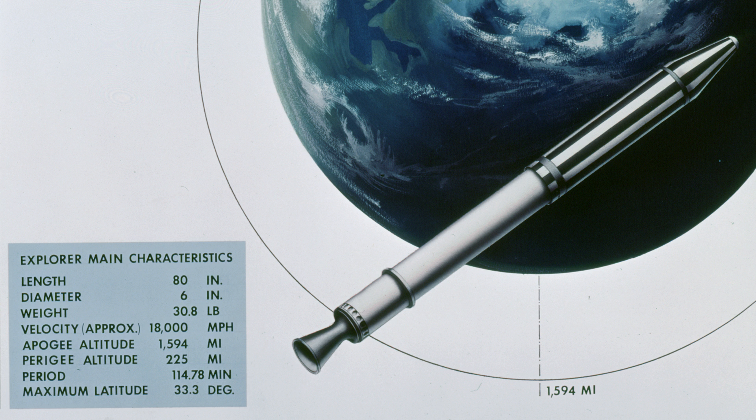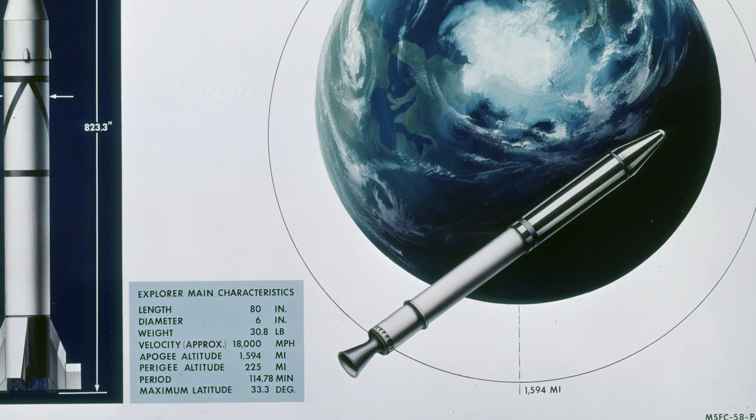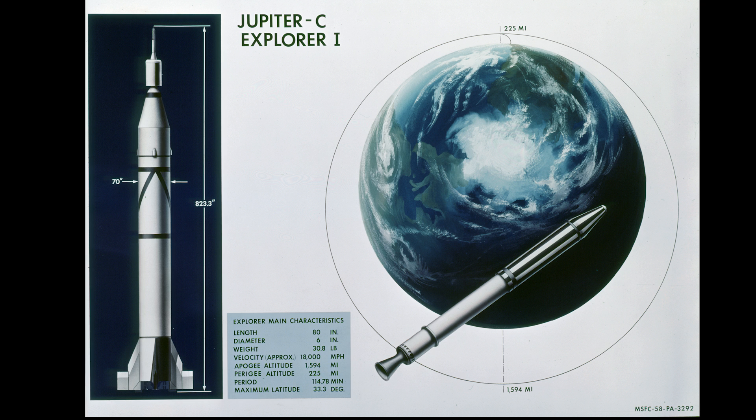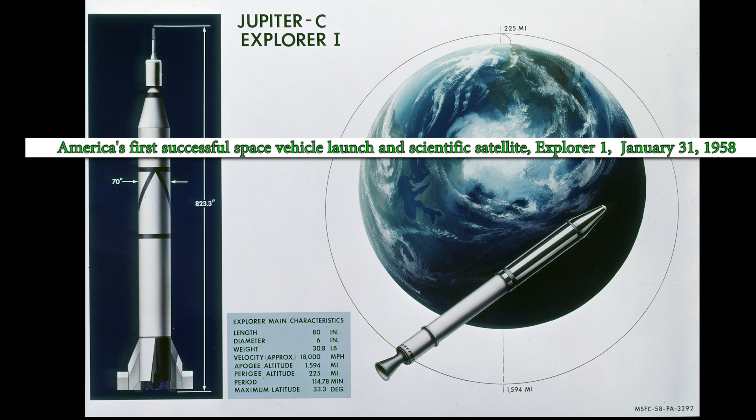So here is our first launch into space which came right after Sputnik. But it was America's first successful launch. And it had a satellite. Part of it was designed by Van Allen. And what it did was it went up to look at the Van Allen belt problem. And I'm going to get into this.